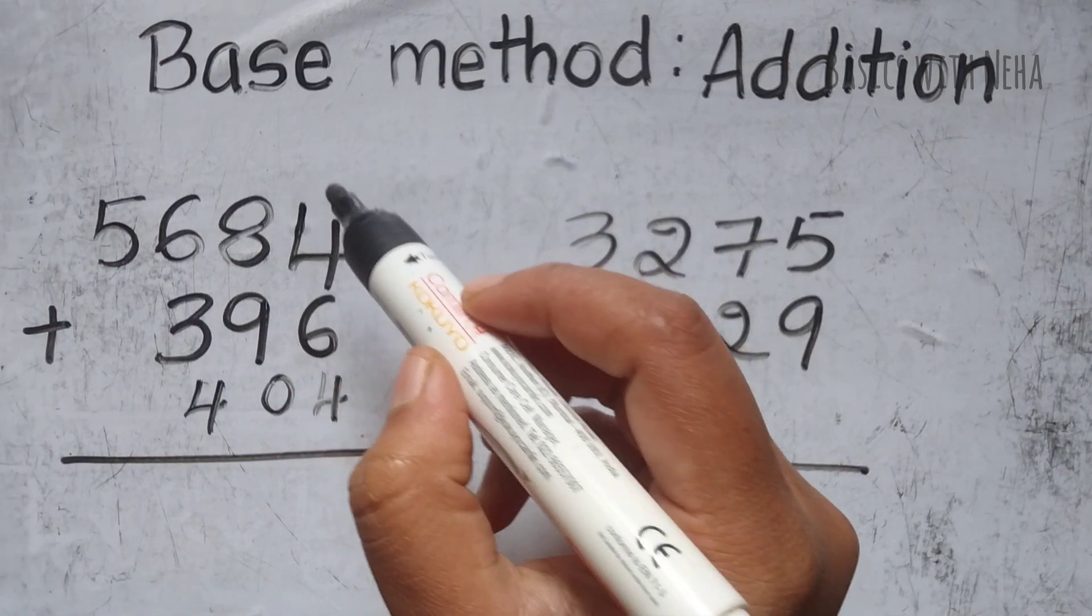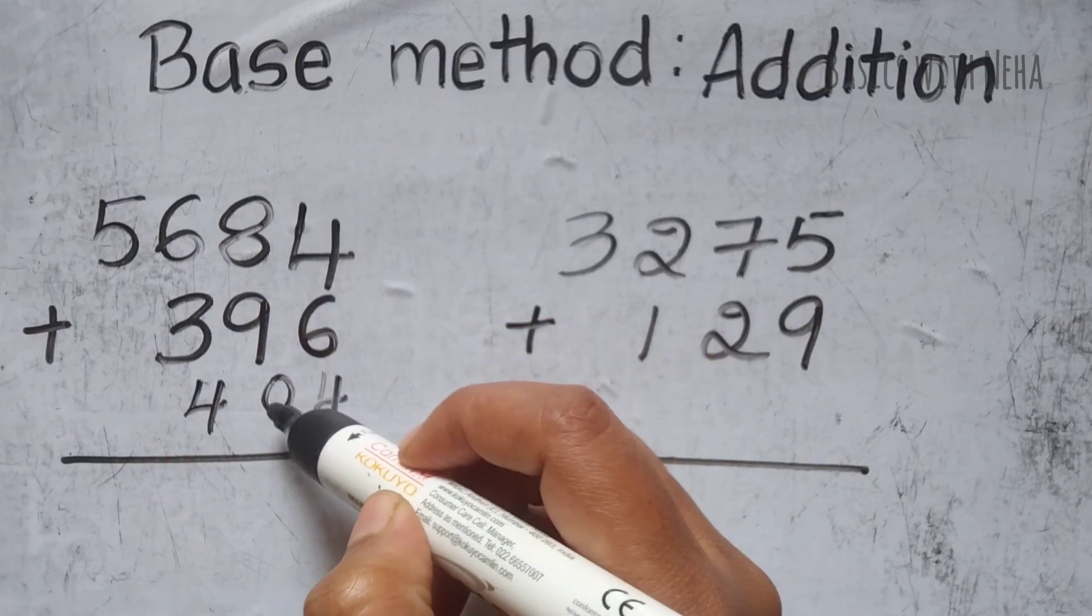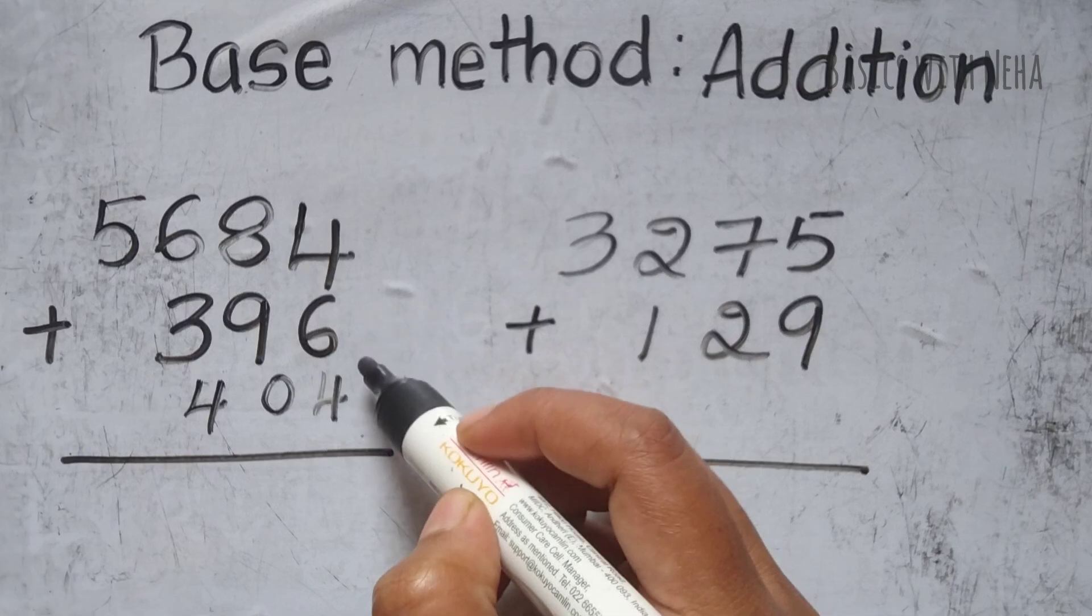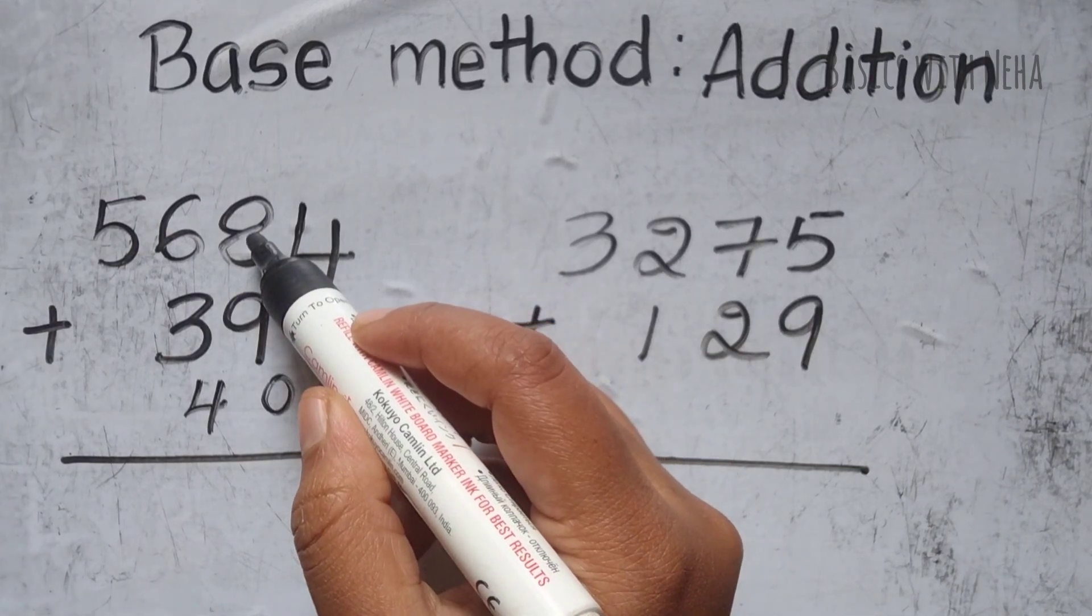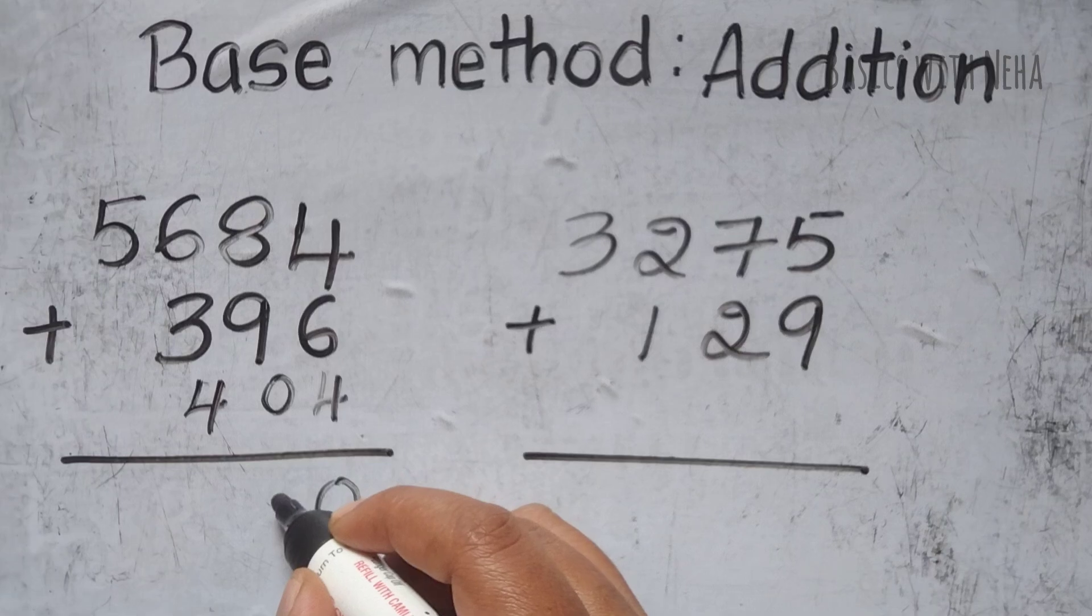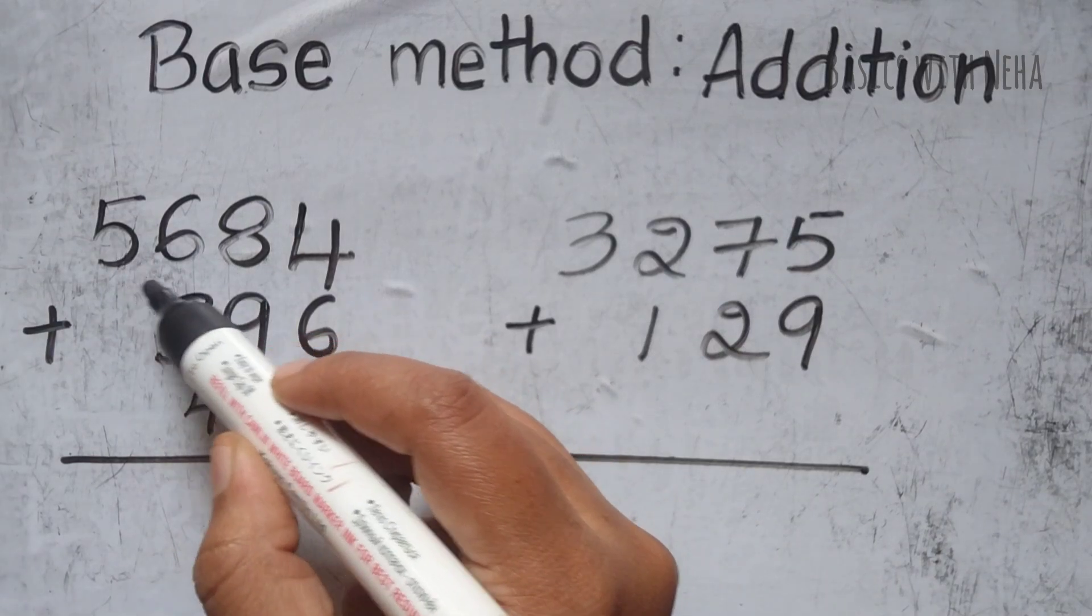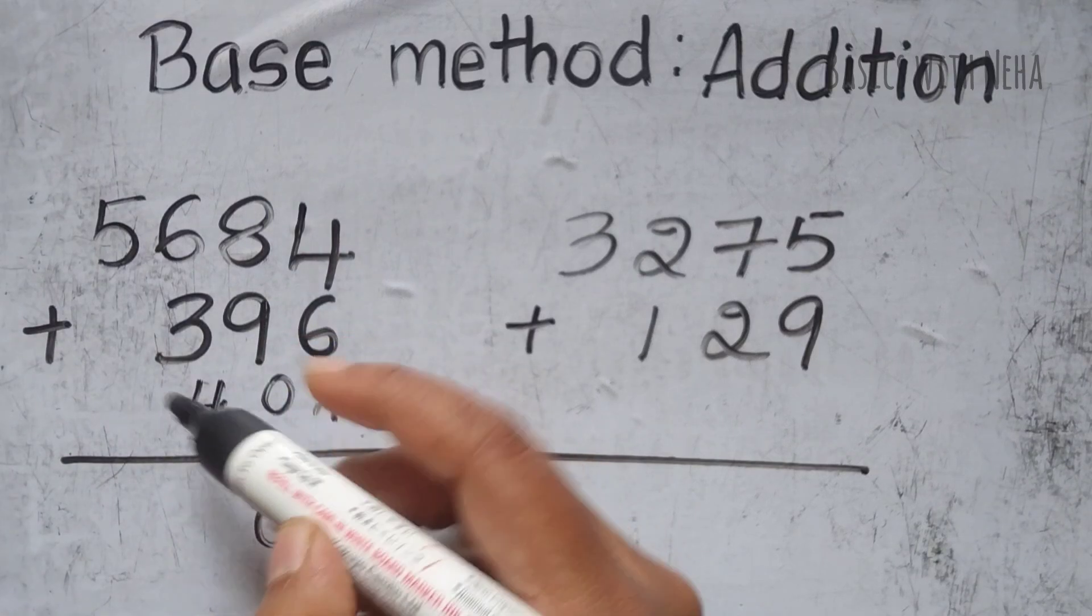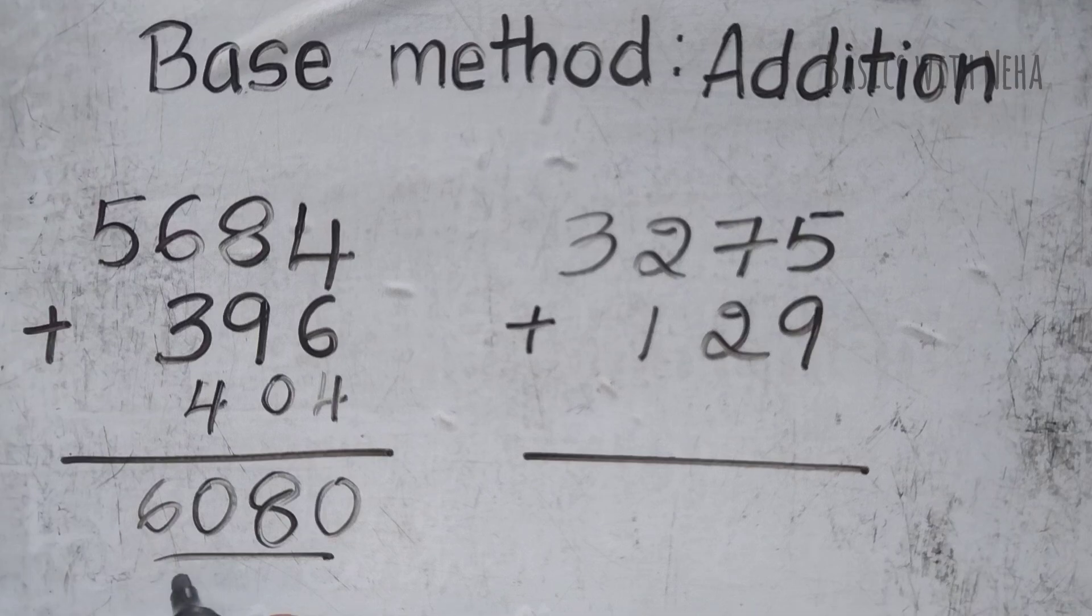Now the rule is I have to subtract the complement and I have to add the base. So I can just subtract 4 minus 4 will give me 0. 8 minus 0 will give me 8. 56 I can take it as a whole. 56 plus 4 will give me 60. And this will be my final answer.